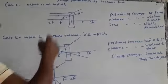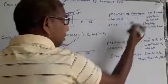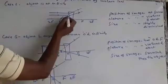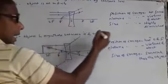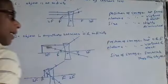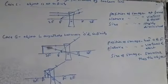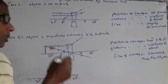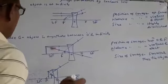That means focus. So position of image at focus. Nature you are seeing here. Actually they are not meeting. That's why nature of image is virtual and erect. And size highly diminished. That means point size.